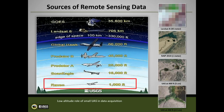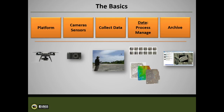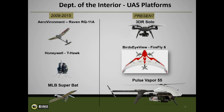As it progressed over these 10 years, the basics are: the platform, the cameras are the sensors, you collect the data, you manage the data, you archive it, and you get it out to the users. But that's no different than what we've always done — it fits right into what we're doing. The platforms: we were given surplus military drones from Redstone Arsenal in Huntsville, Alabama. We put those to use and used them up until about 2015. That got us into the ballgame because the FAA was evolving with this as we were.